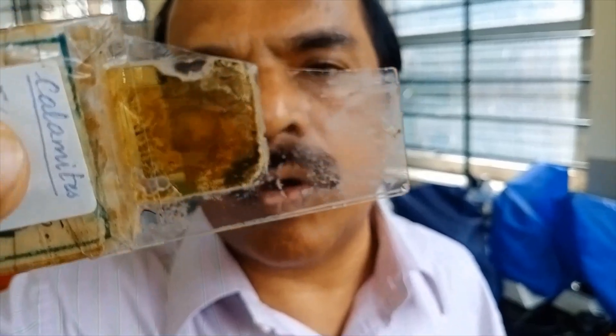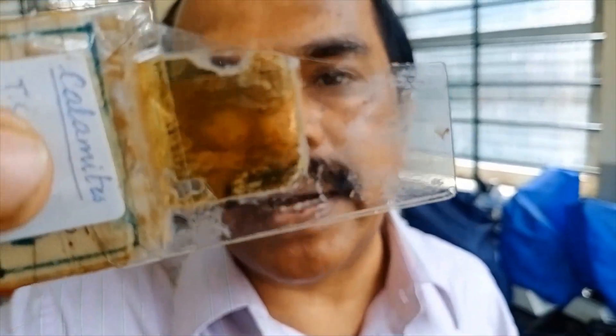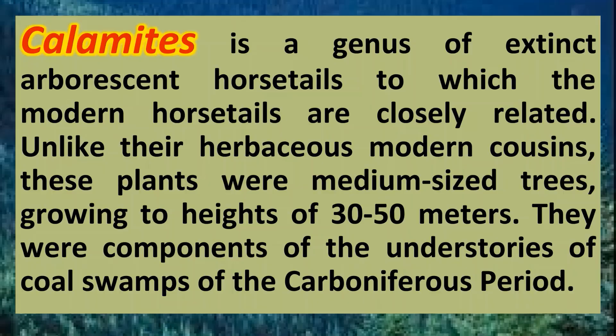This is the slide of a fossil called Calamites. This is the transverse section of the stem, and you can see the arrangement of vascular bundles in this fossil specimen.